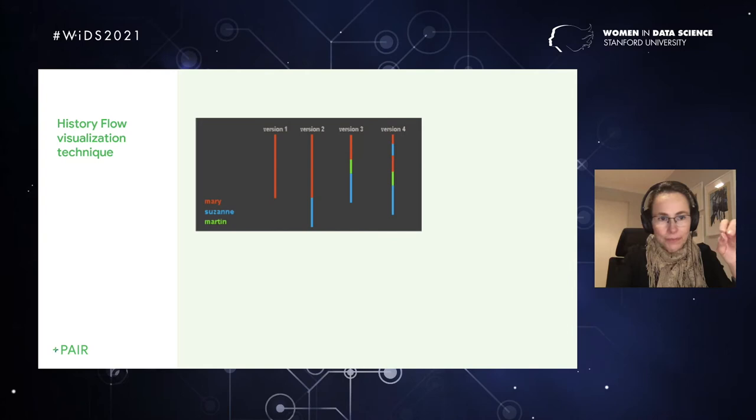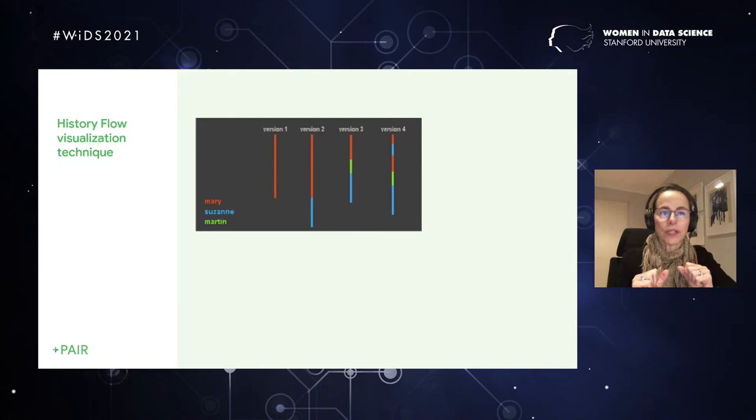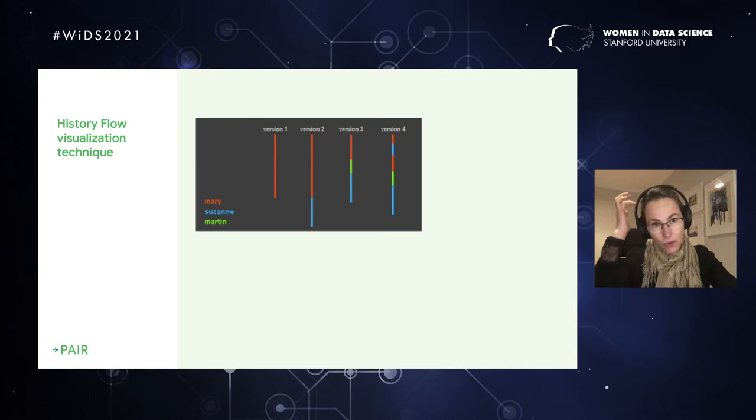We created a new technique. Imagine you have an article that is being edited by three people: Mary, Suzanne, and Martin. I'm going to color each one of their contributions by a different color. So Mary is going to be orange, Suzanne is going to be blue, and so forth. And then for each version of the article, I draw a vertical line. The length of that line is the length of the article. So version one was all done by Mary, so it's all orange. Version two comes along, and Suzanne says, this is great. I want to add a little paragraph at the end. Version three, Martin comes along and says, oh, this is looking good, but I really think we should shorten the introduction, so you can see that the orange line there is shorter now. You can see how each version starts to change.